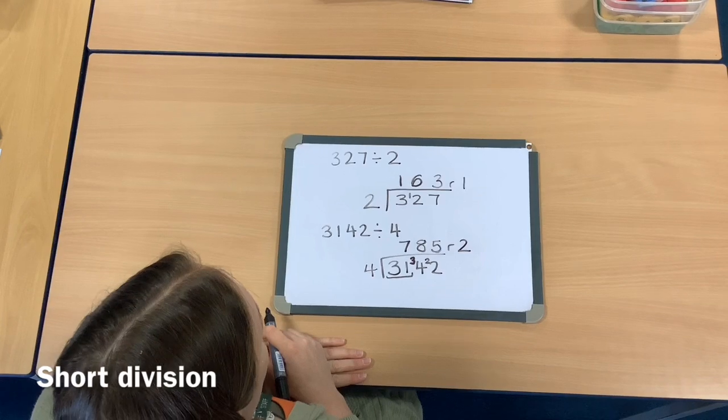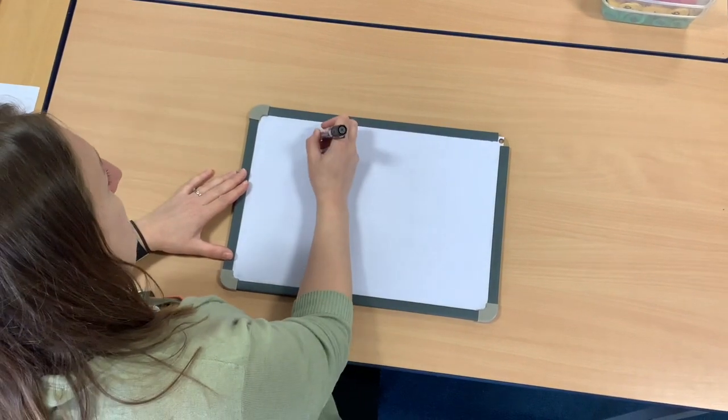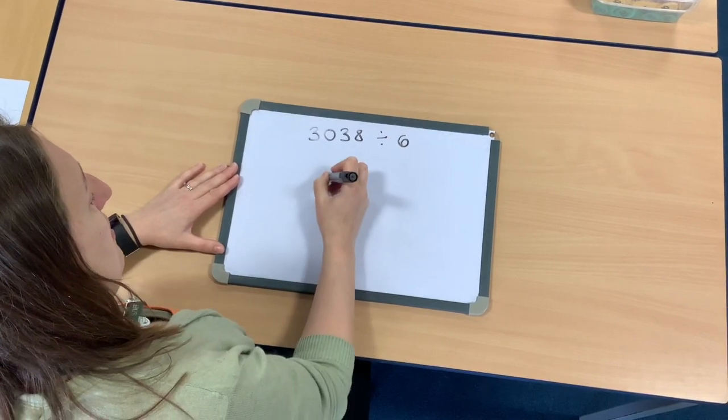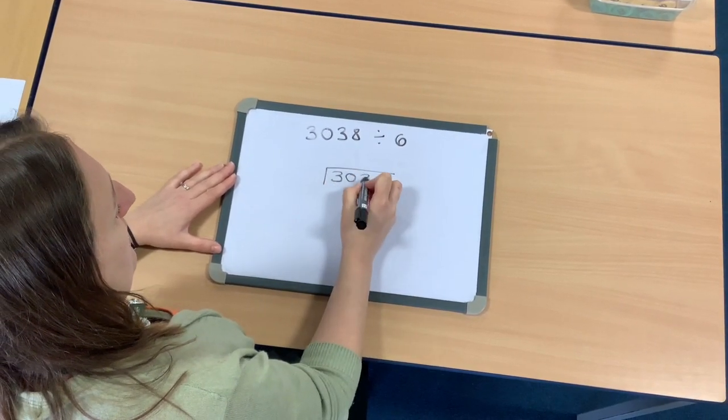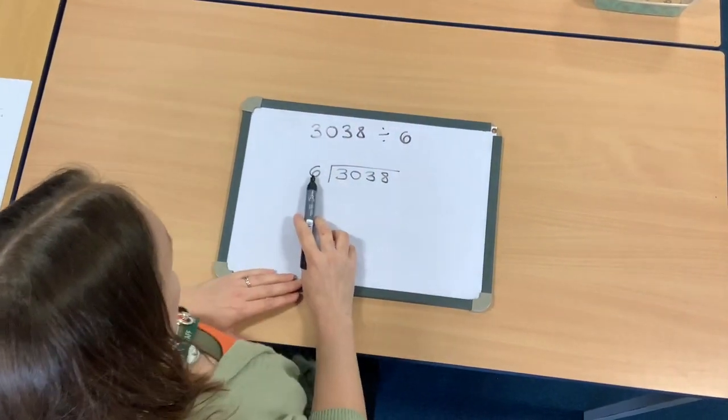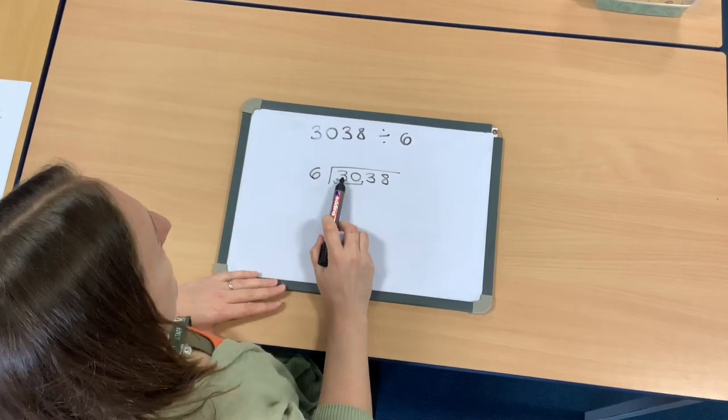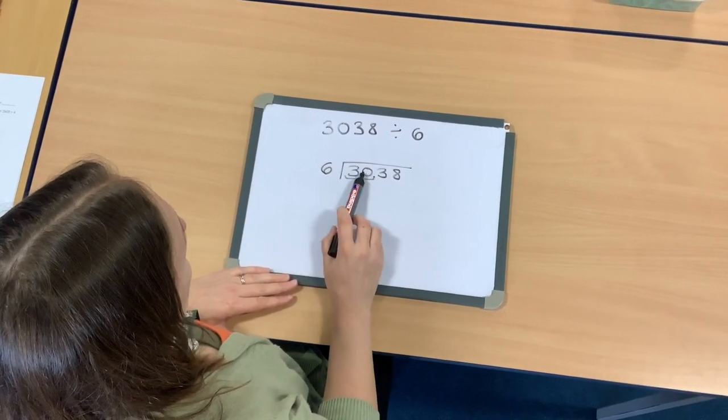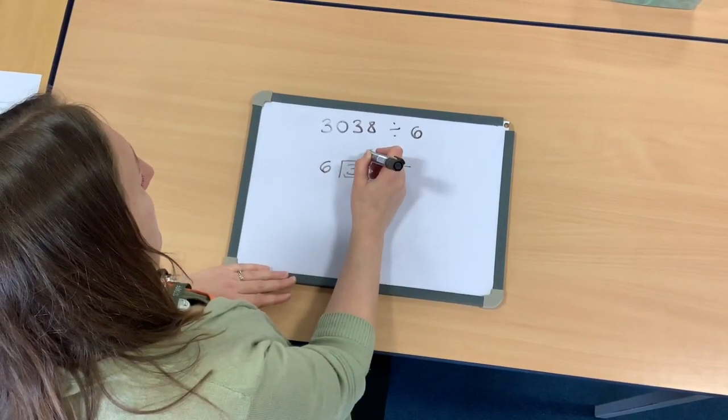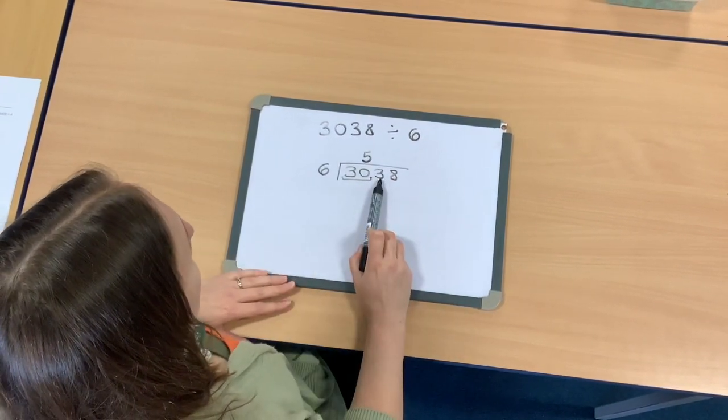One more example. This time I'm going to do 3038 divided by 6. My dividend there is 3038 and my divisor is 6. I've got my 3 thousands first. We already know I'm not going to be able to split those into 6 equal groups, so I'm going to take them together with the hundreds. I now have 30 hundreds. I know that 30 is in the 6 times table, and I know that it's in there 5 times—5 lots of 6 is 30—and I haven't got any left over.